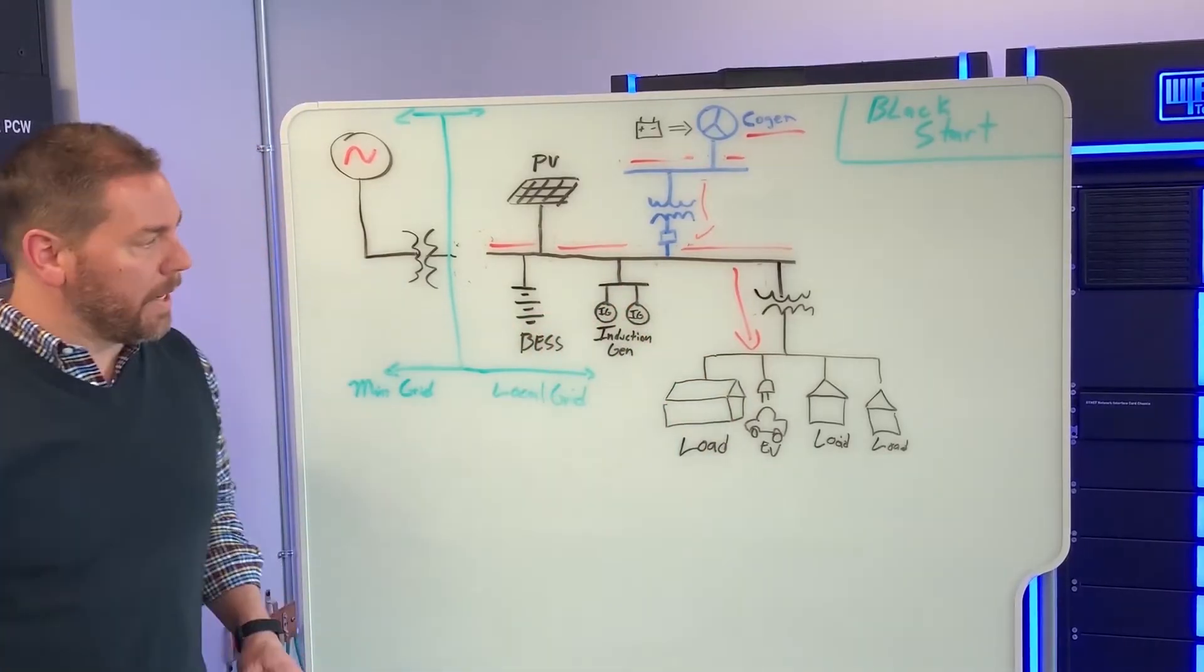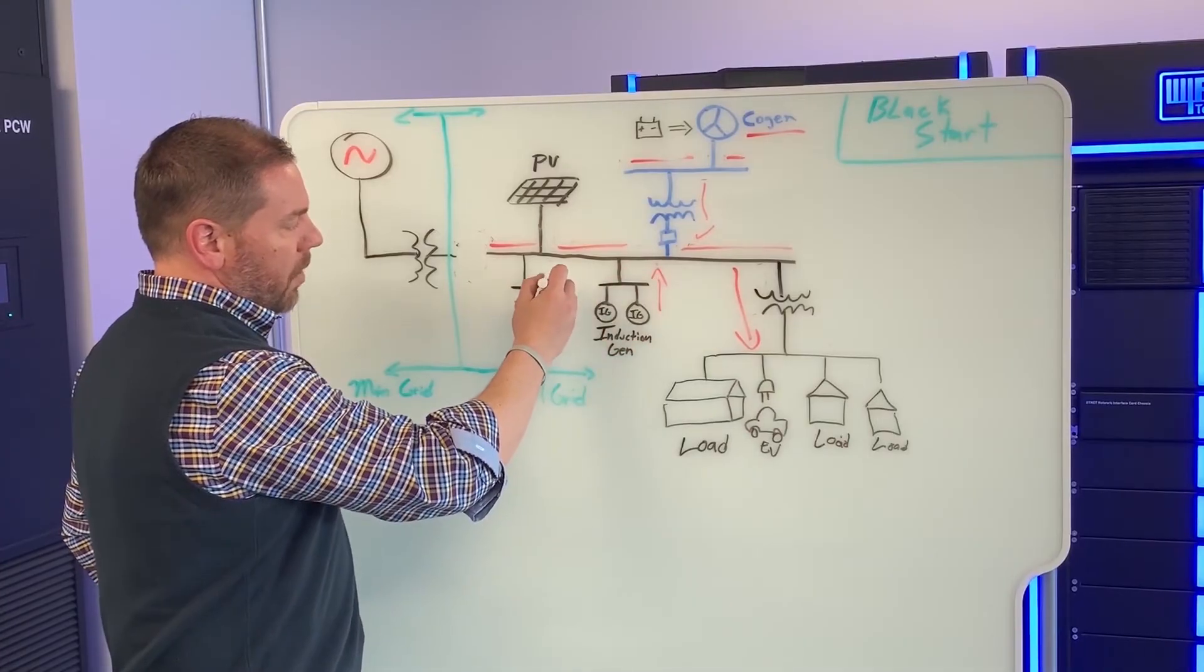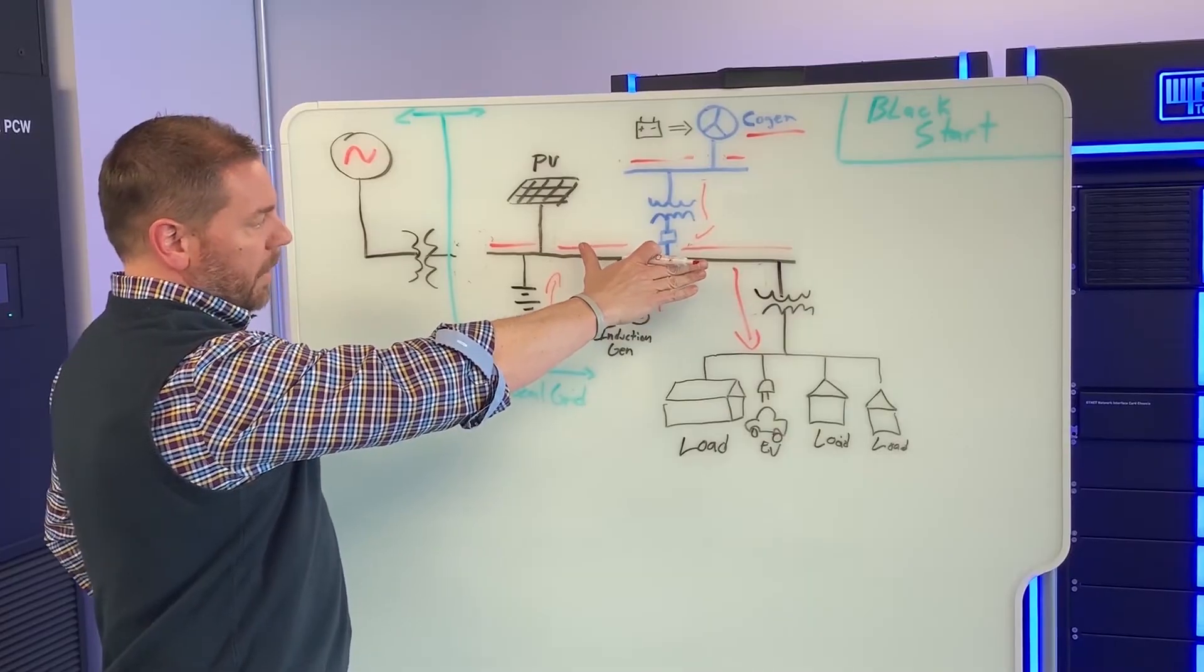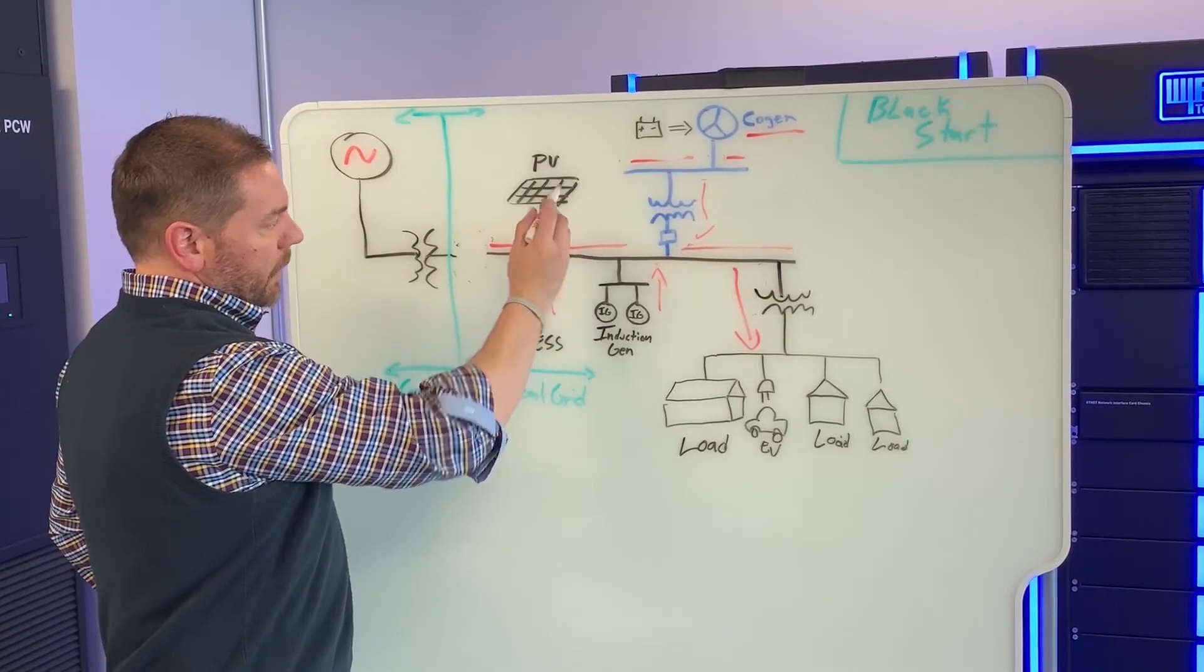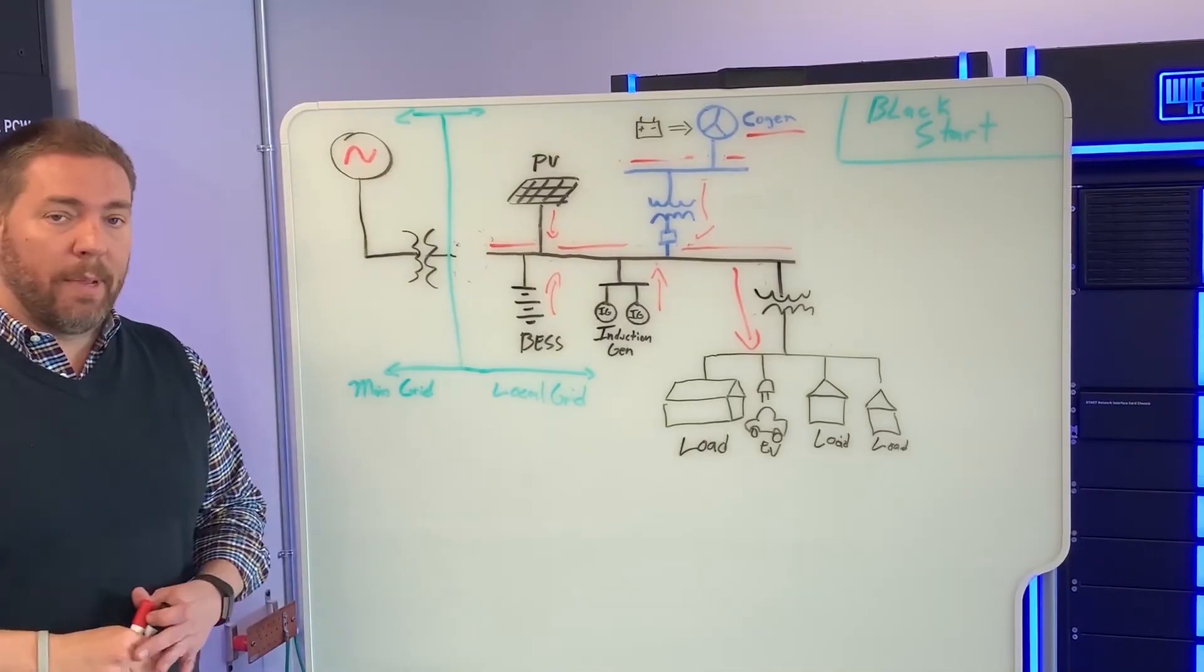And then, at some point, these other DERs can start kicking on because now the Cogen has maintained and formed this grid and can start contributing to the system. And that's pretty much how Black Start works.